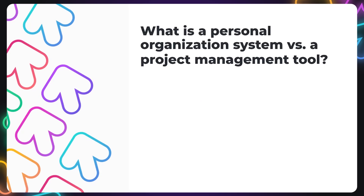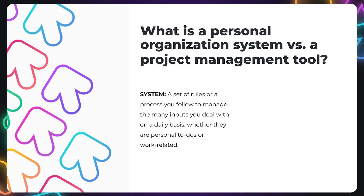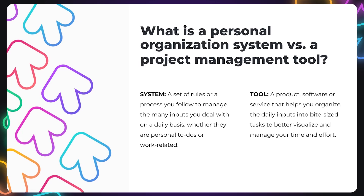So what is an organization system versus a project management tool? A system is really a set of rules or guidelines — even a process you follow to manage the many different communications you receive daily, whether they're personal to-do's or work related. Whereas a tool like ClickUp helps you organize all the emails, chats, desktop notifications, calls, etc., into manageable bite-sized pieces for better time management and productivity.